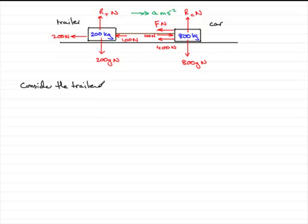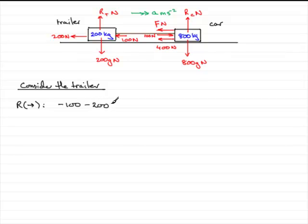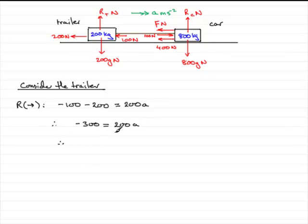Considering the trailer, we resolve to the right in the direction of motion. Resultant force equals mass times acceleration. The 100 newtons acts to the left, so that's minus 100, and the 200 newtons acts to the left, so that's minus 200. The mass is 200. Simplifying: minus 300 equals 200A, so A equals minus 300 over 200, which is minus 3 over 2 meters per second per second.